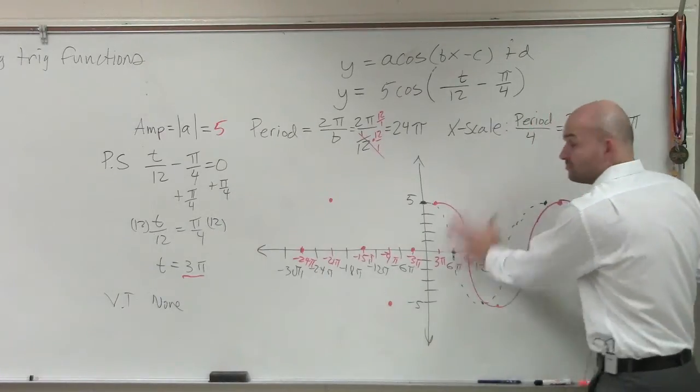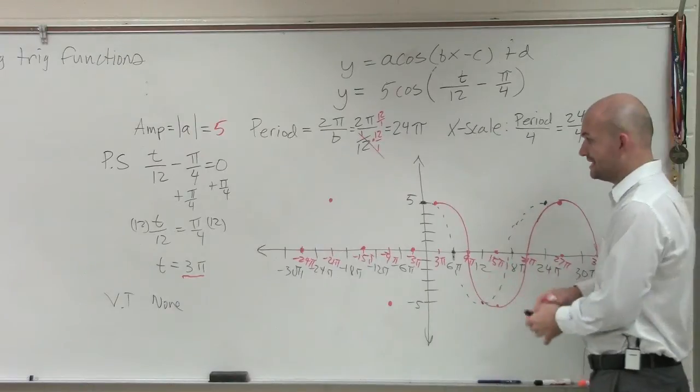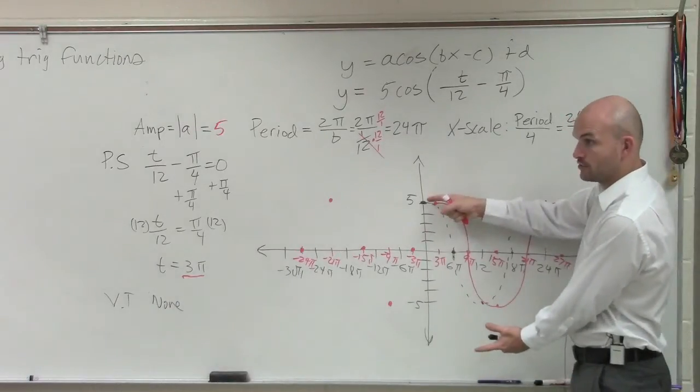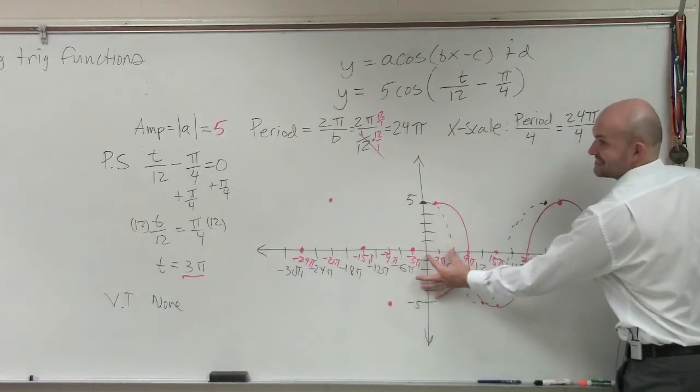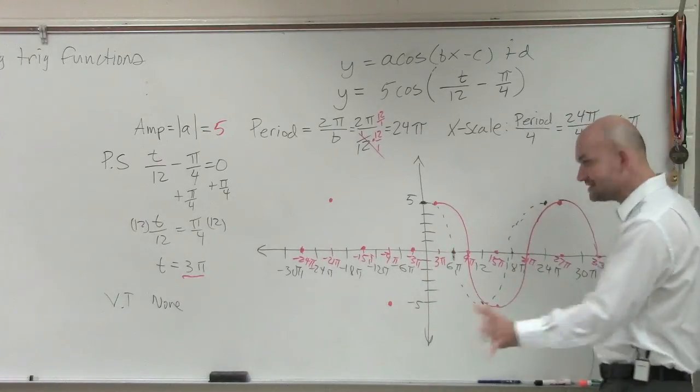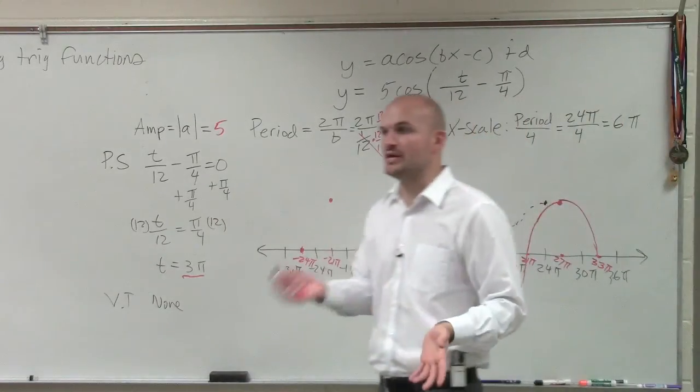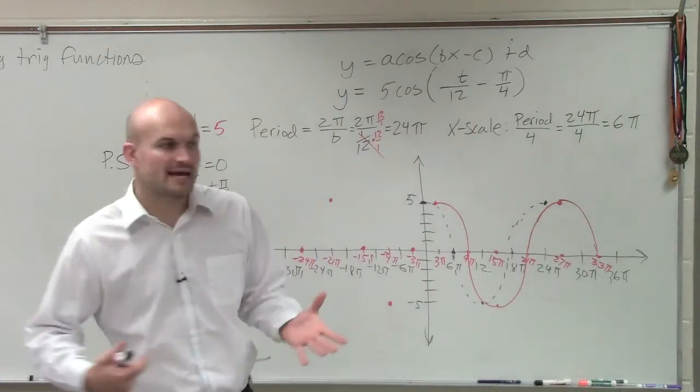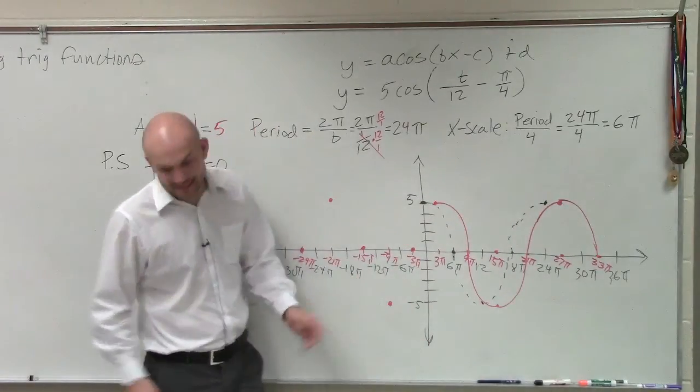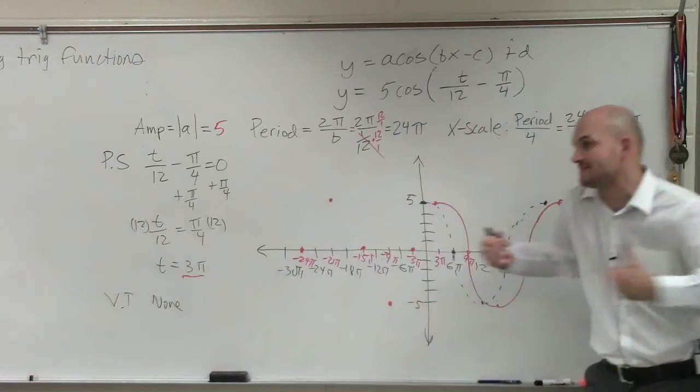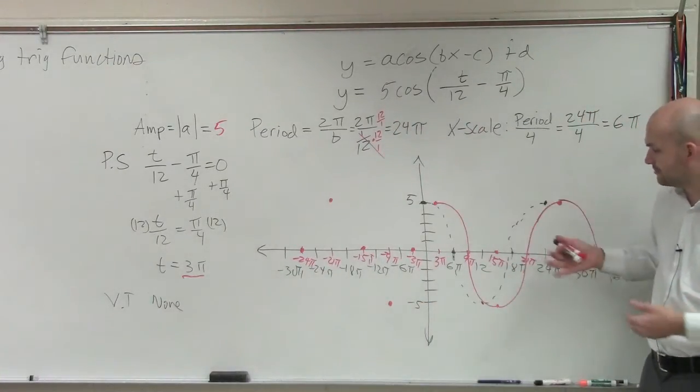So the only difference between the black graph and the parent graph that I showed you before is instead of going up to 1, it now goes up to 5. Instead of an x scale at π halves, the x scale is 6π. So that's the only difference that we have. And obviously, since the x scale is different, the period is going to be different. And then the last difference is now once I graph the black one, I added in a phase shift, which is 3π. So then I shifted the black graph over 3π units. And that's where I come up with the red graph.